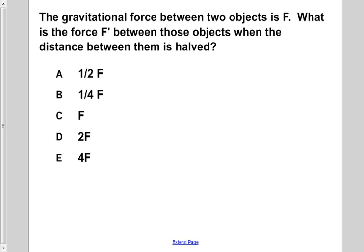So initially, we have a force between two objects. The gravitational force is equal to gravitational constant times mass 1 times mass 2, all divided by r squared.